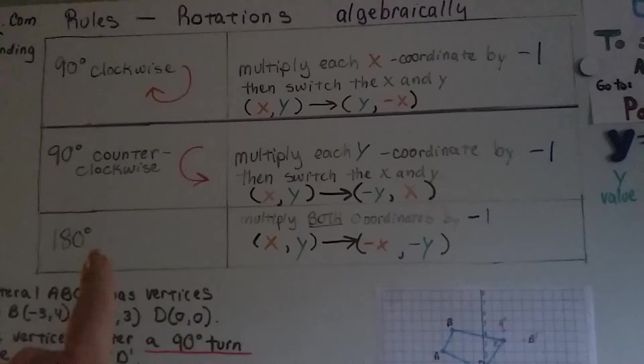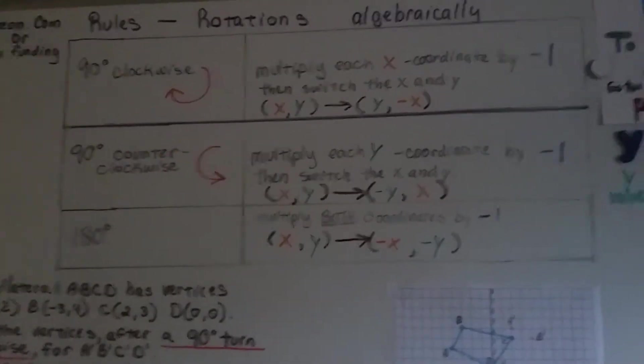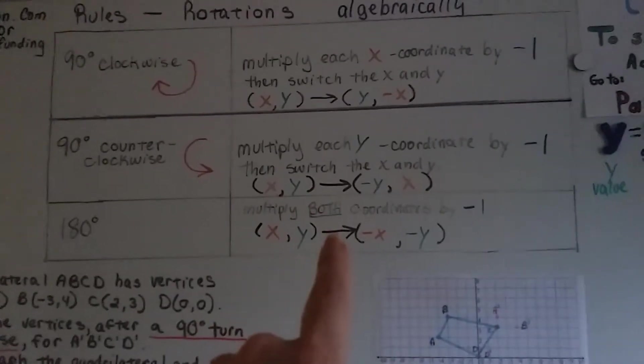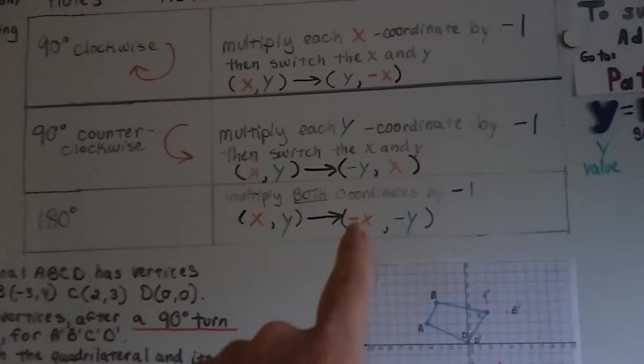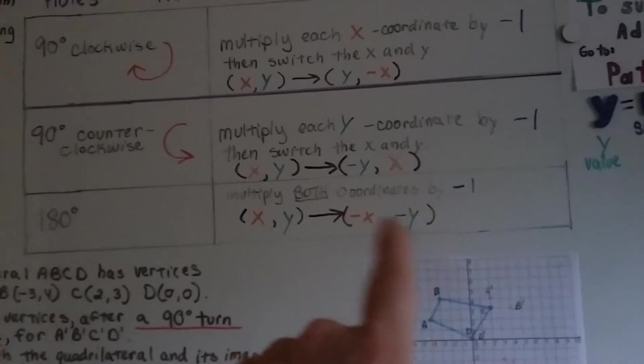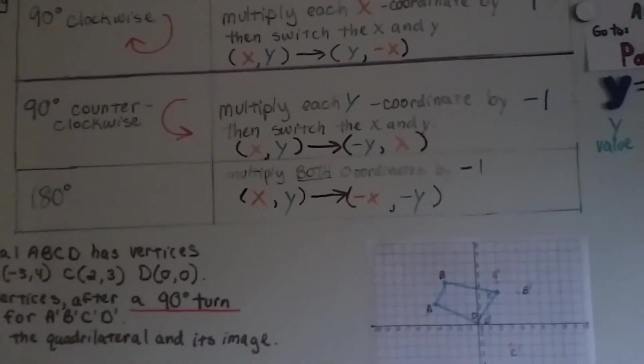If we rotate it 180 degrees, that's halfway around a circle, we multiply both coordinates by negative 1. So they're both negative x and negative y, and they're not switched because they're both negative.